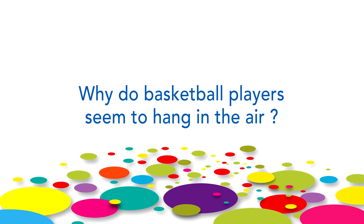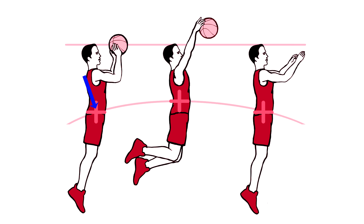Why do basketball players seem to hang in the air? Most basketball players give the illusion of floating in the air when they jump. This is why Michael Jordan is said to fly. This is an effect of the center of gravity. The athlete's center of gravity always follows a parabolic path through the air.